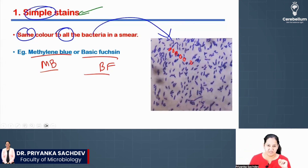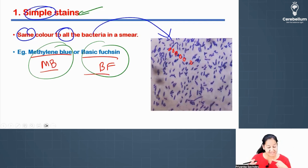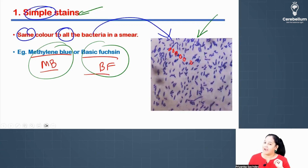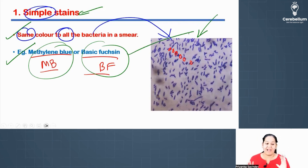Or vice versa: the stain which gives same color to all bacteria is known as simple stain. The second question: which of the following is an example of simple stain? In the options you may get methylene blue or basic fuchsin — mark simple stain. The third question is image-based: identify the stain. You can see all bacteria are the same color — it's a simple stain. So one question on definition, one on example, one on image.